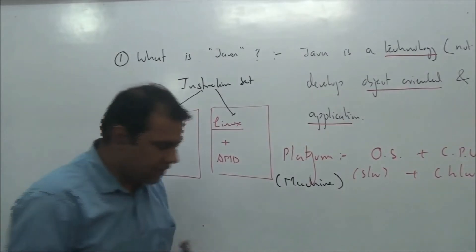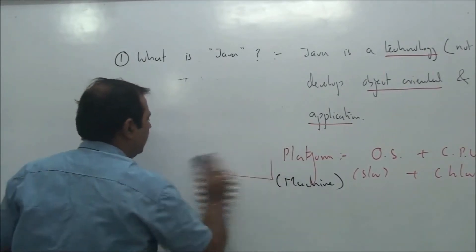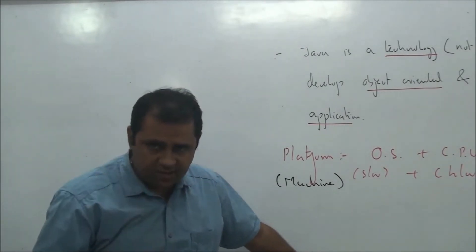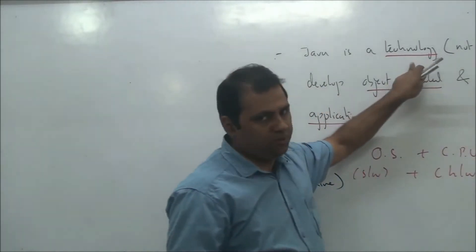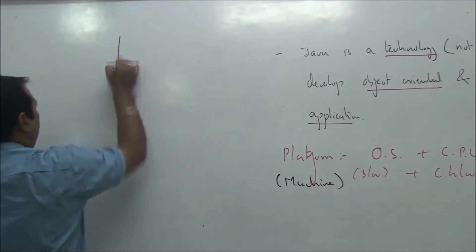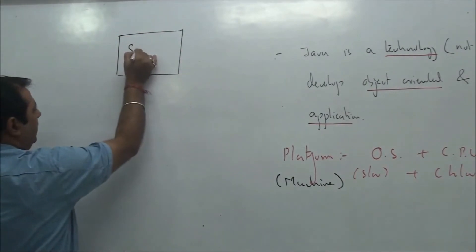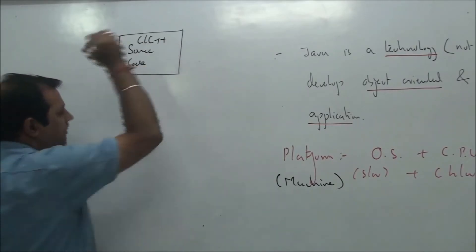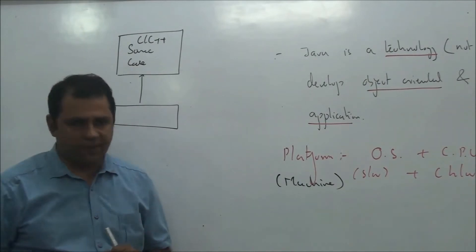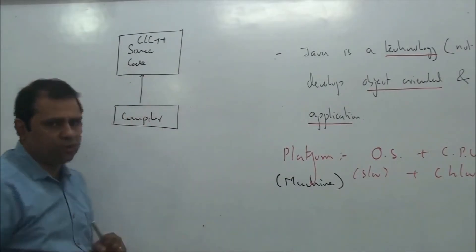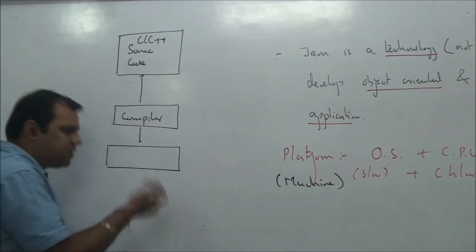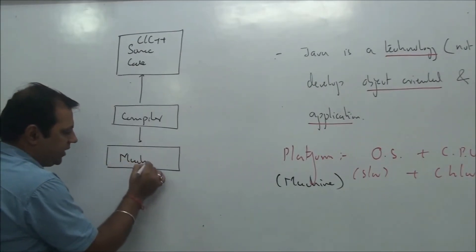Now let's understand platform independency by looking at how a C or C++ program is compiled and executed — why C and C++ are platform-dependent languages, and why Java is platform-independent. When we develop a C program, that program is called source code. A special software called the compiler takes this source code and generates machine code. The Java compiler, by contrast, never generates machine code.